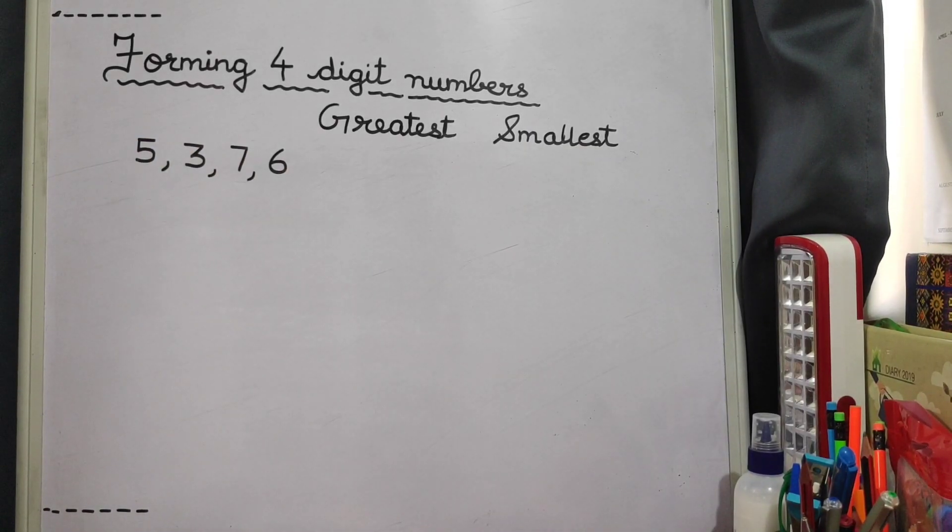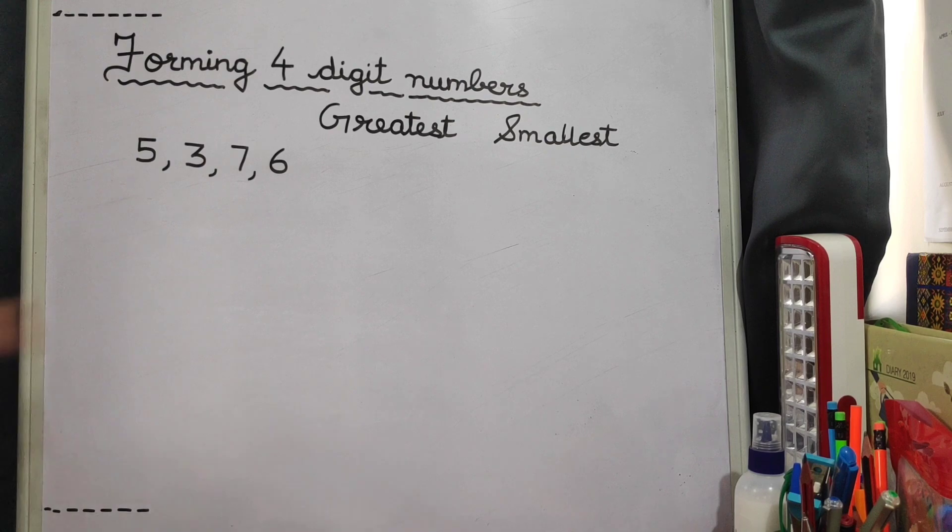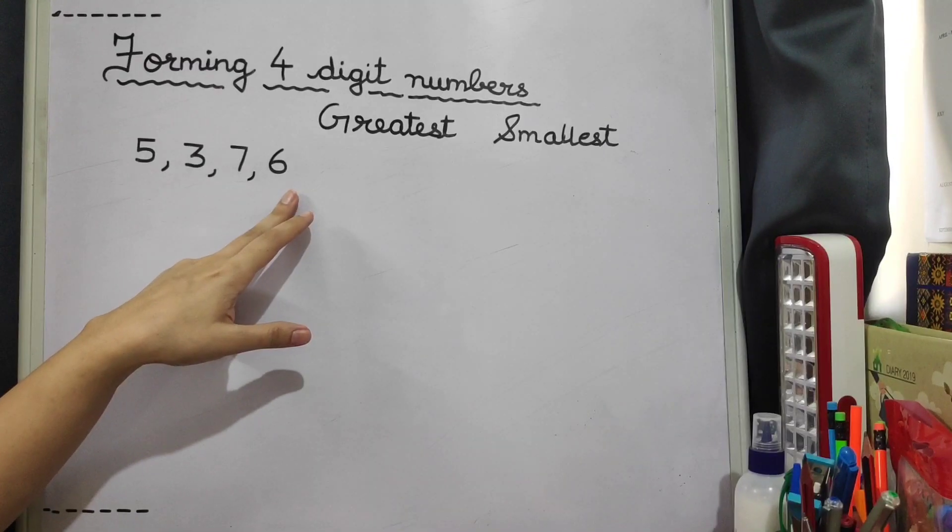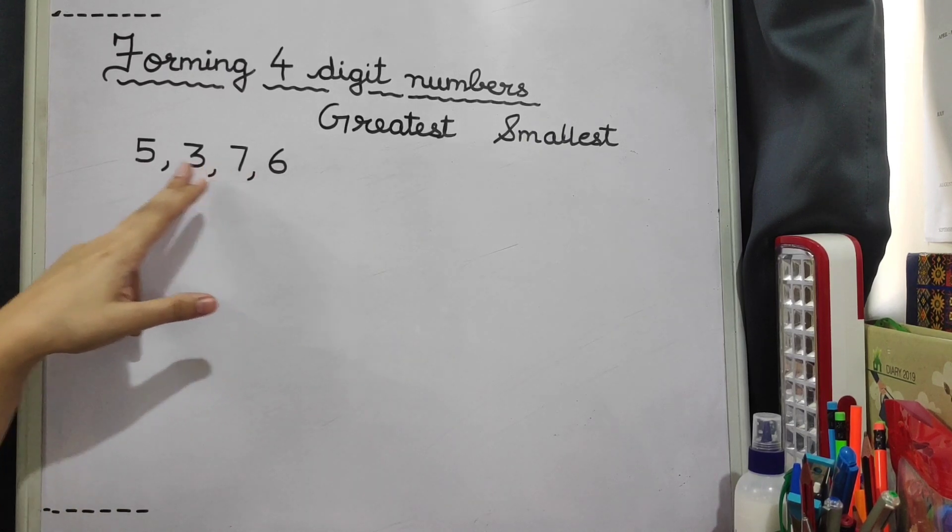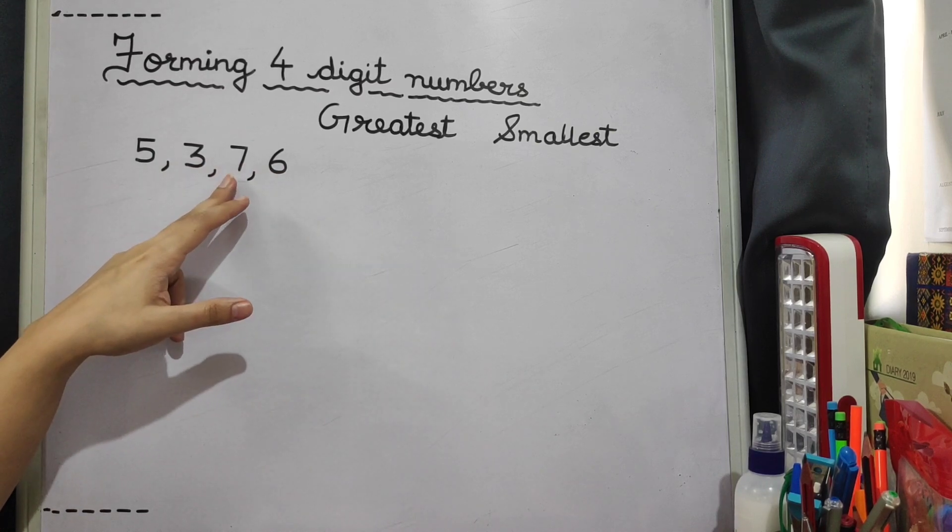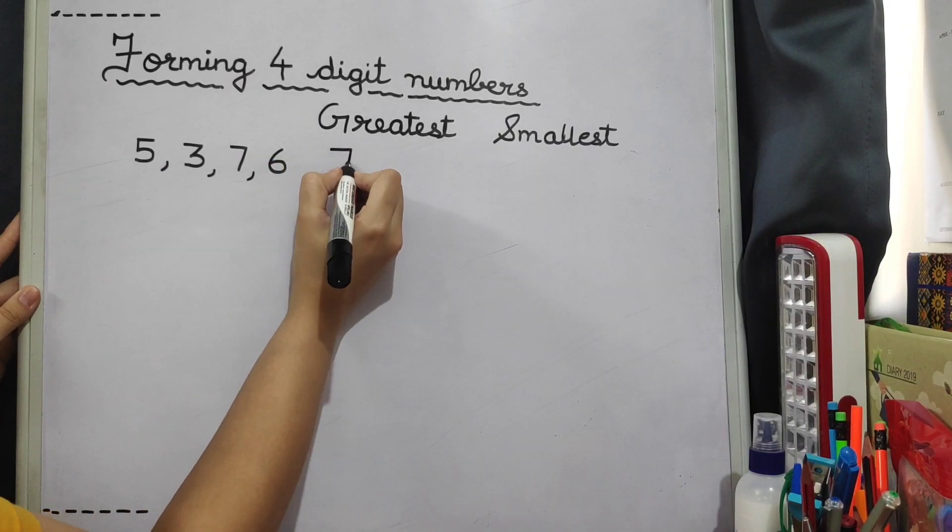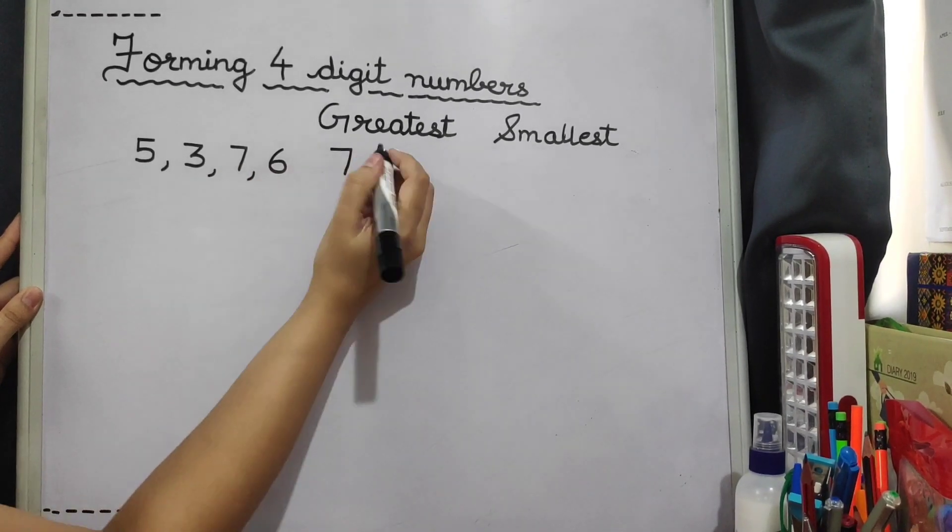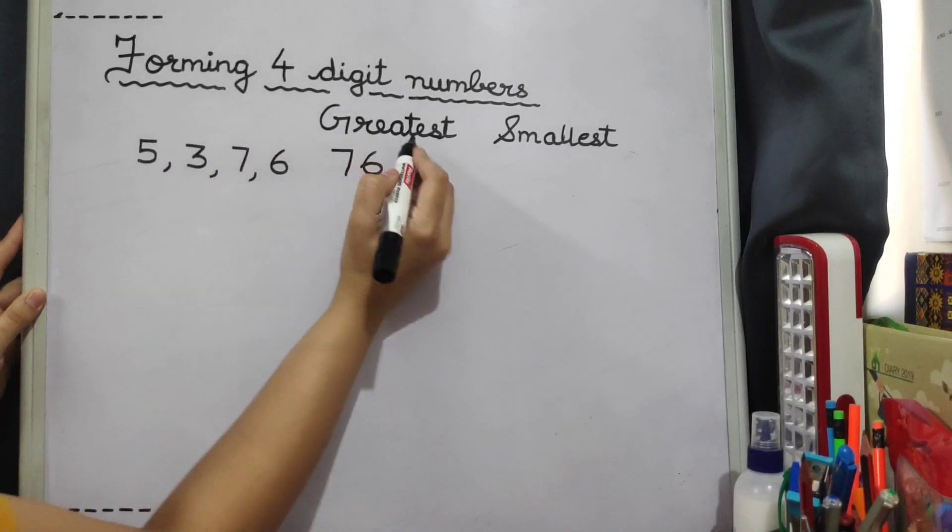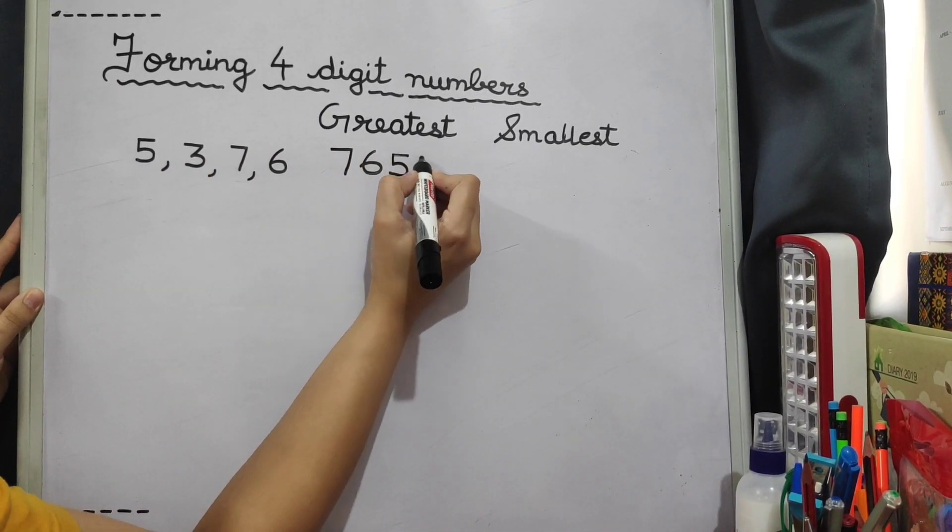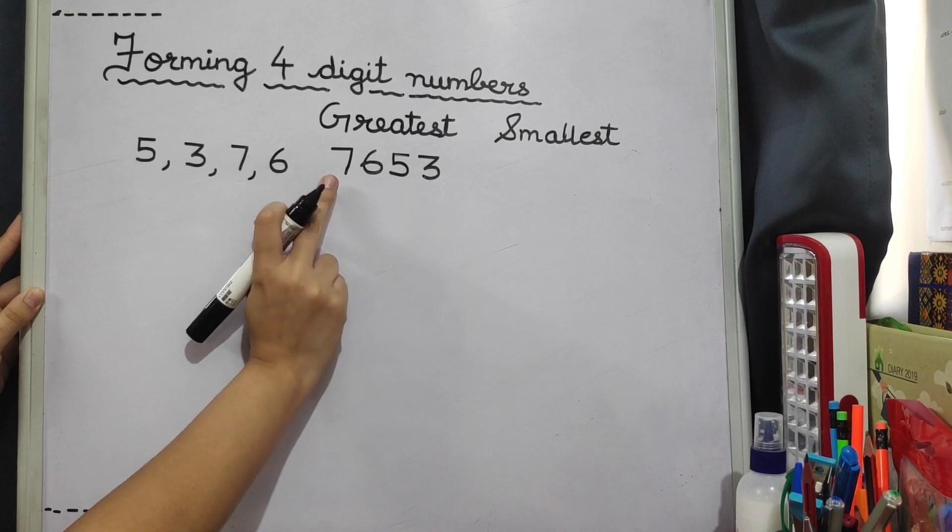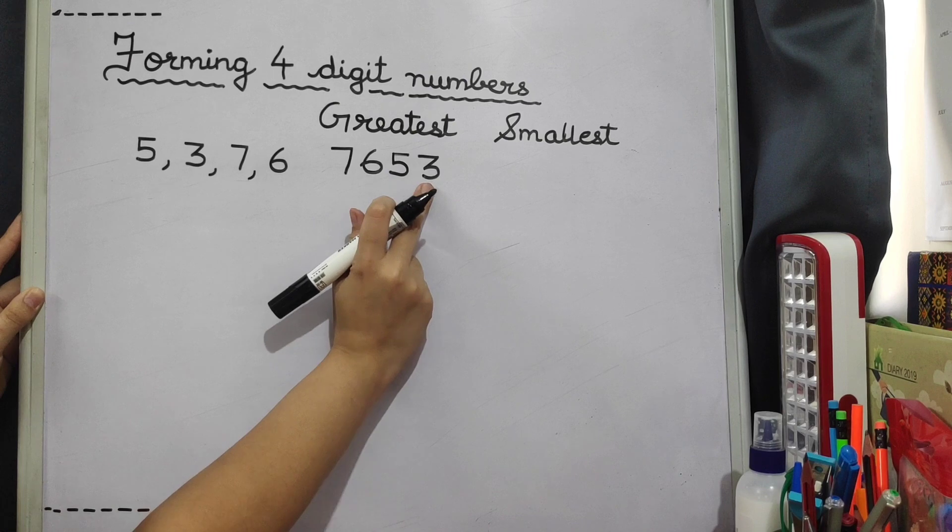Suppose now you have to make the greatest number from these four digits. So you are going to start with the greatest number here. So out of these four digits the greatest number is seven. So we are going to write seven and then after seven we go to six, then five and then three. So the greatest number formed here is 7653.